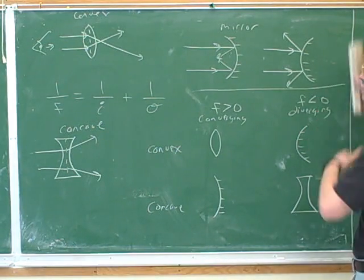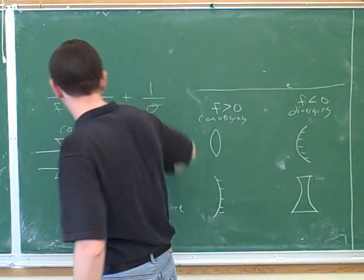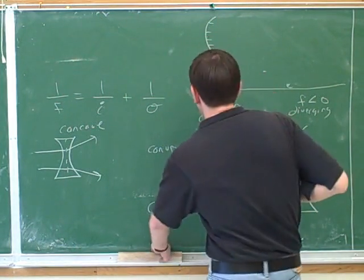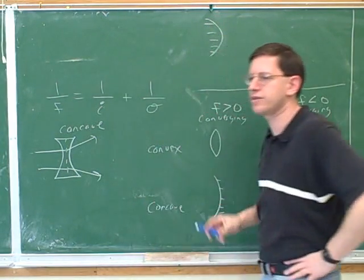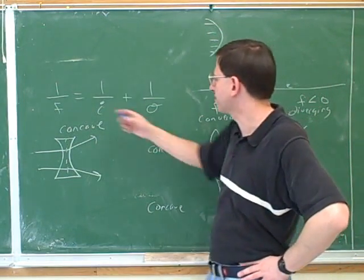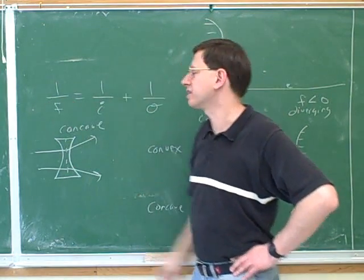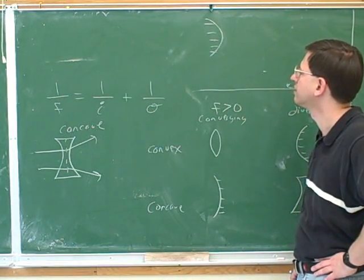So if I draw this mirror, which of the variables does it tell us about? F, I, or O? Well, looking at this tells us about F. And does it tell us that it's positive or negative? Negative. Because it's diverging.